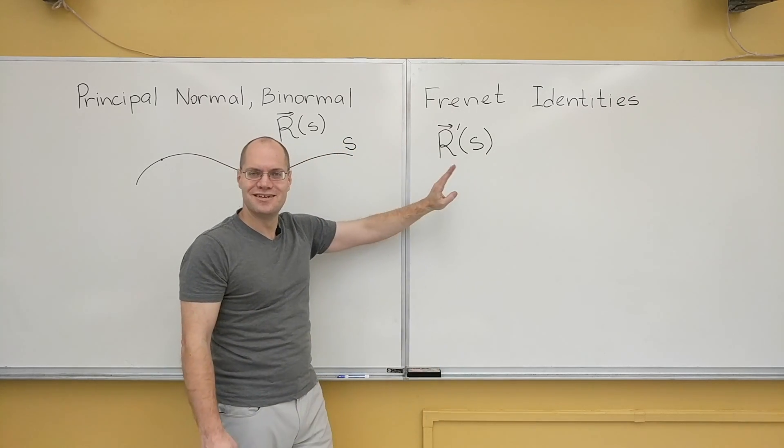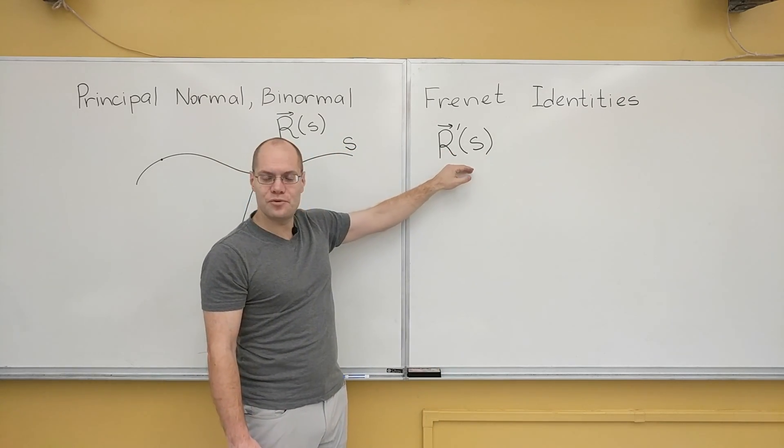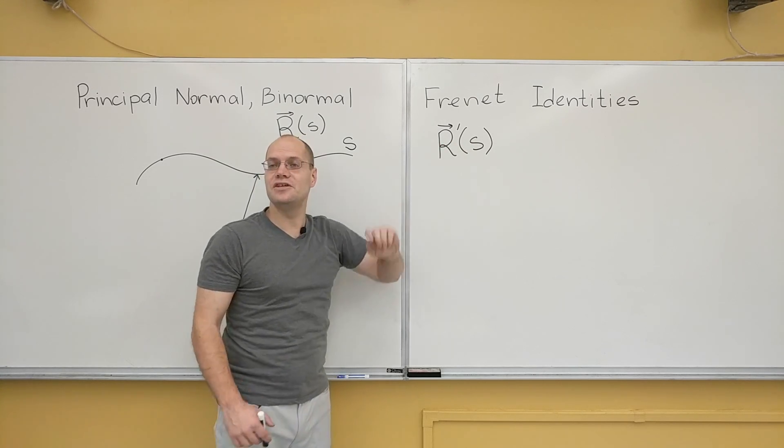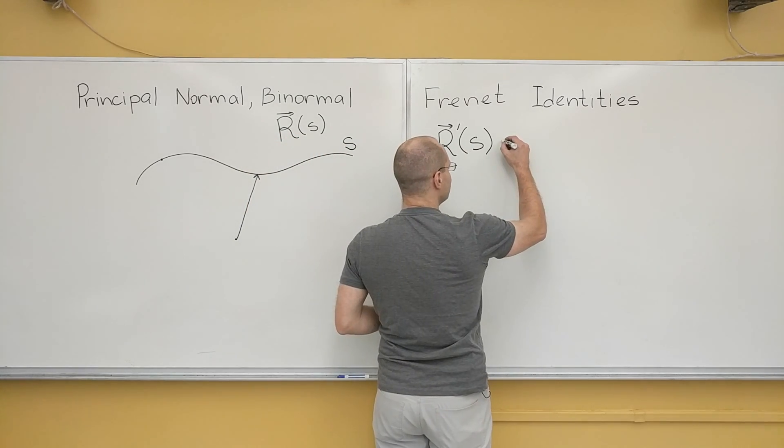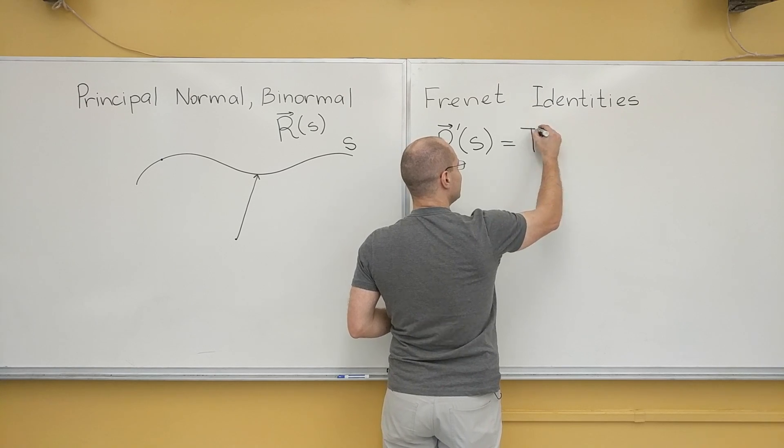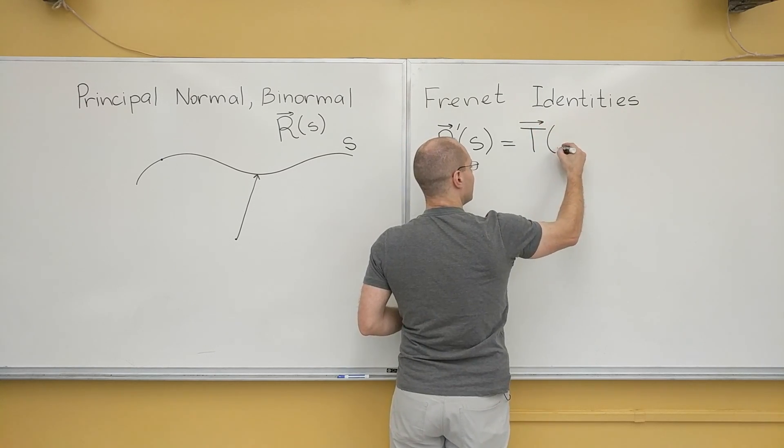Okay. So to summarize, the r prime with respect to s, where s is arc length, is the unit tangent which we denoted by capital letter T. T of s.